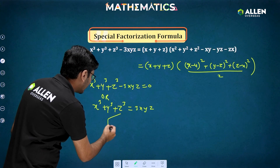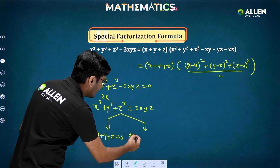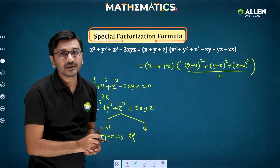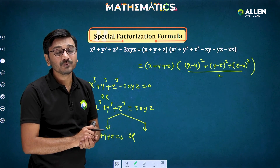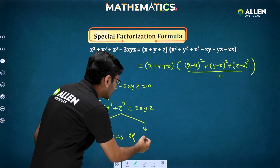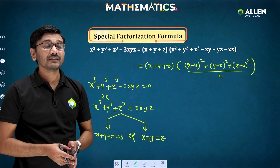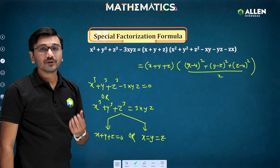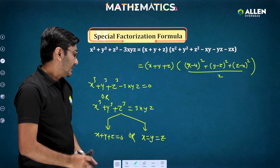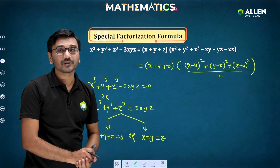If the expression is zero, then definitely one of the factors must be zero. So either the sum of the three numbers is zero, or the second bracket is zero. But since every term in the second factor is a square and squares cannot be negative, every term must individually be zero — meaning x = y and y = z. The converse is also true: if x + y + z = 0, then the sum of the cubes equals three times the product. Or if the three numbers are equal, then the sum of cubes also equals three times the product.